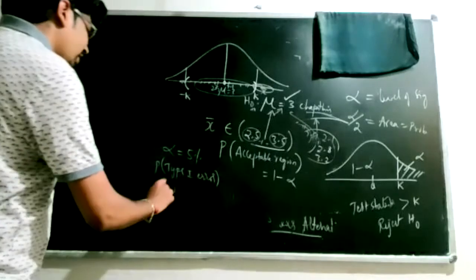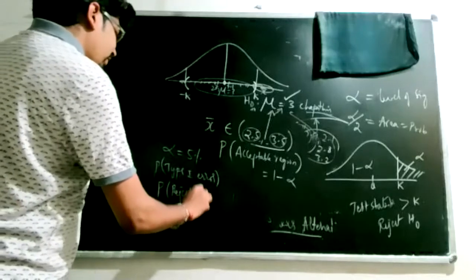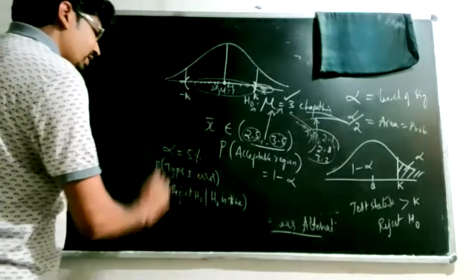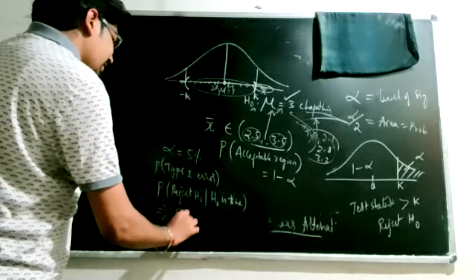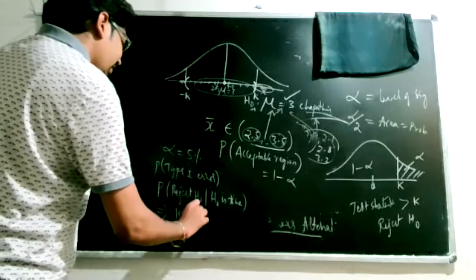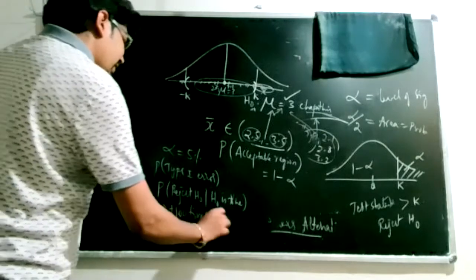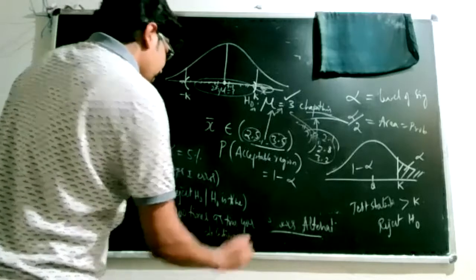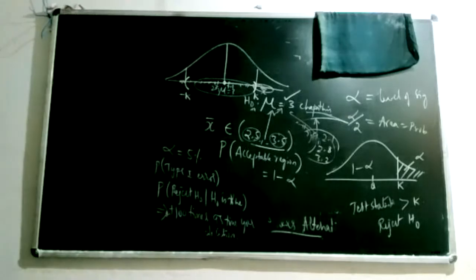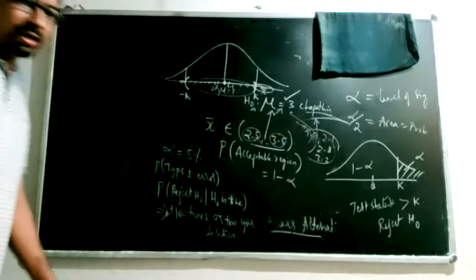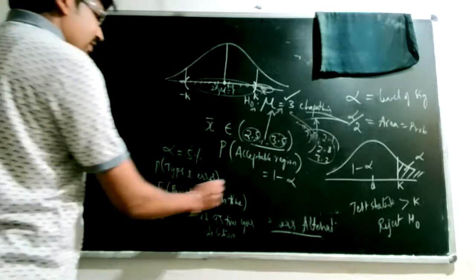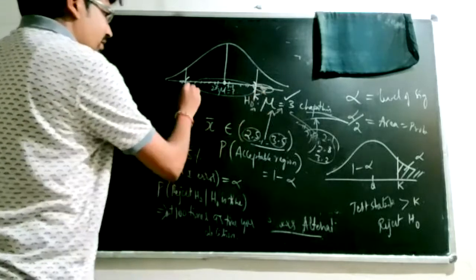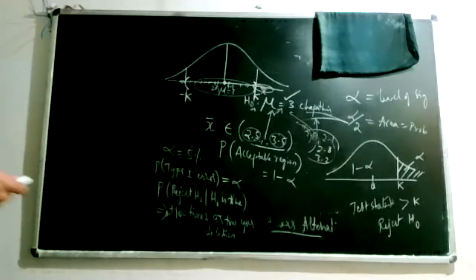When alpha is 5%, the probability of type 1 error — rejecting H0 when H0 is actually true — is 5%. If you perform the same test 100 times using 100 samples, 95 times your decision will be correct. By fixing alpha, we obtain cutoff values A and minus A from the standard normal table.